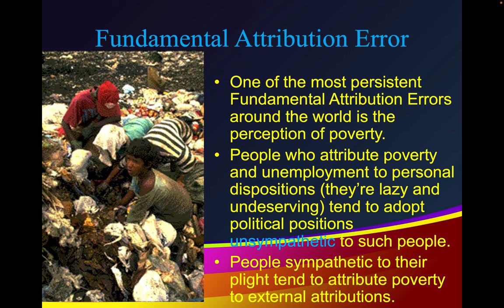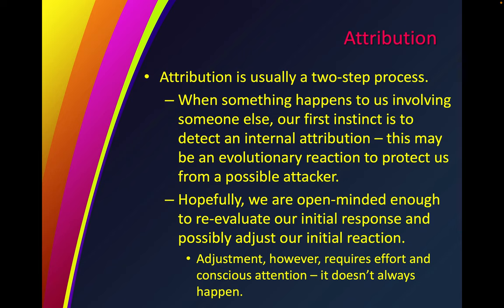Attribution is usually a two-step process. When something happens to us involving someone else, our first instinct is to detect an internal attribution — this may be an evolutionary reaction to protect us from a possible attacker. Hopefully, we are open-minded enough to reevaluate our initial response and adjust our initial reaction. Adjustment, however, requires effort and conscious attention and doesn't always happen.